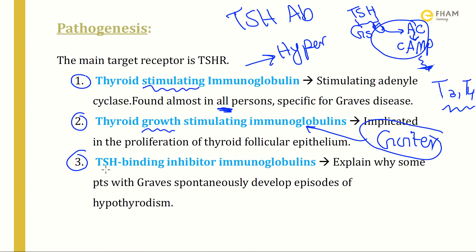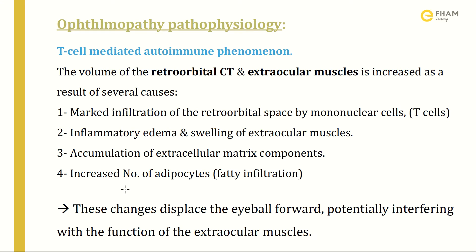The third antibody is TSH binding inhibitor immunoglobulin. In some patients with Graves' disease, episodes of hypothyroidism develop, and this antibody is the cause. TSH binding inhibitor immunoglobulin produces hypothyroid symptoms.